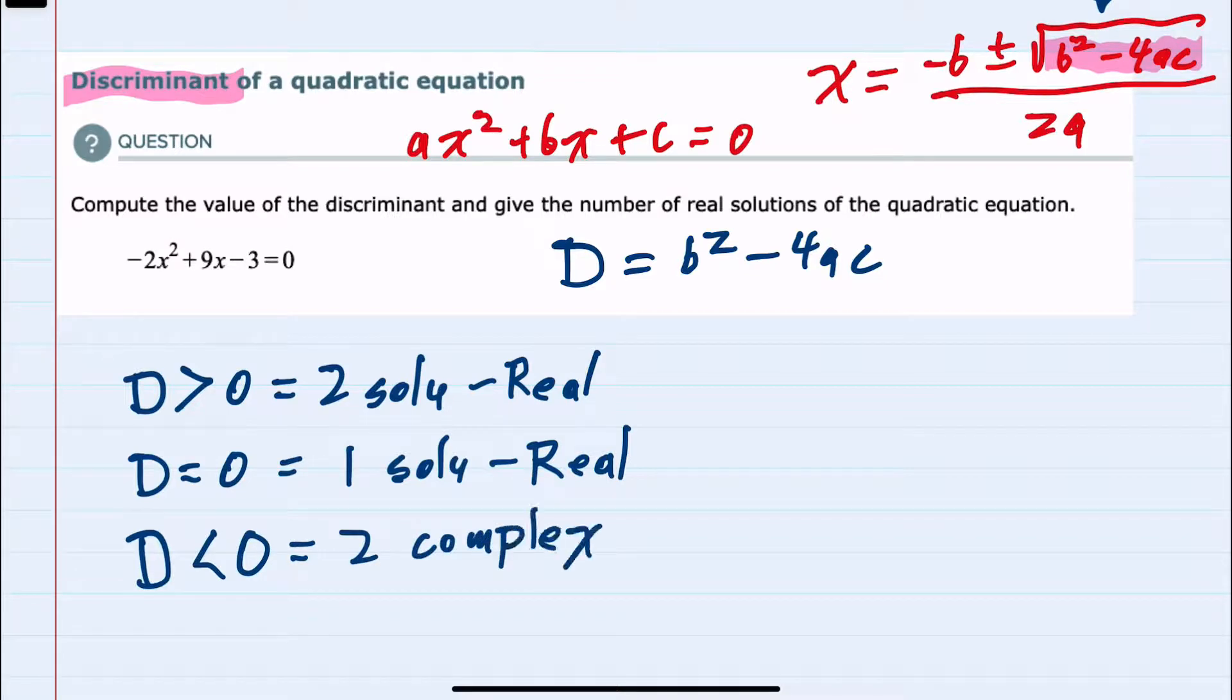Since we're only asked here to identify the number of real solutions, real solutions will be either 2, 1, or 0 in the event that we have a negative discriminant.